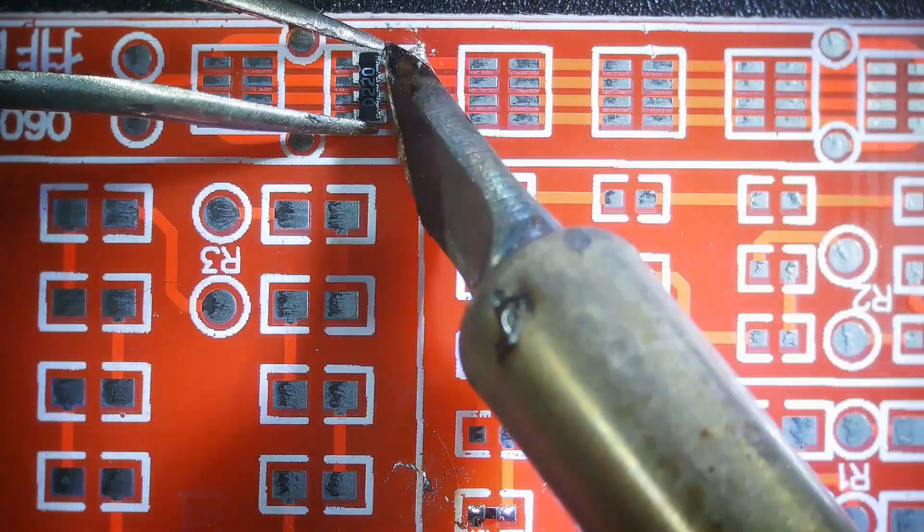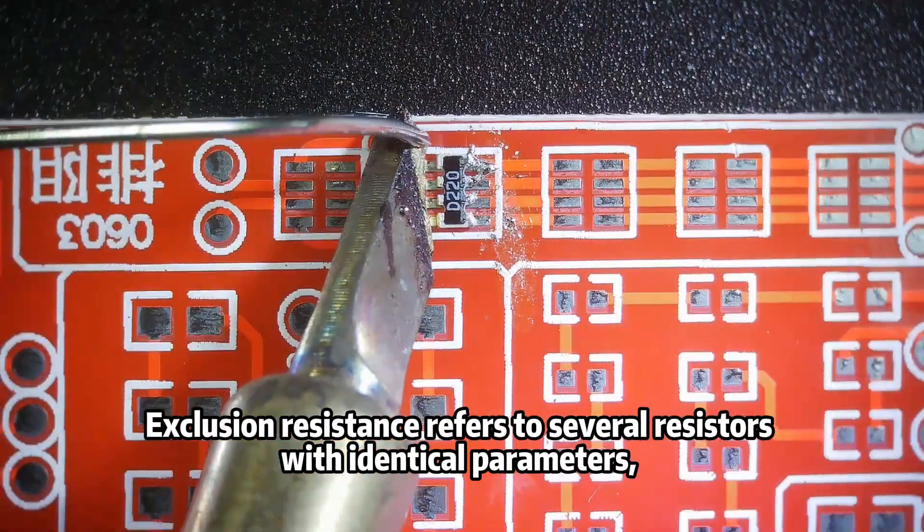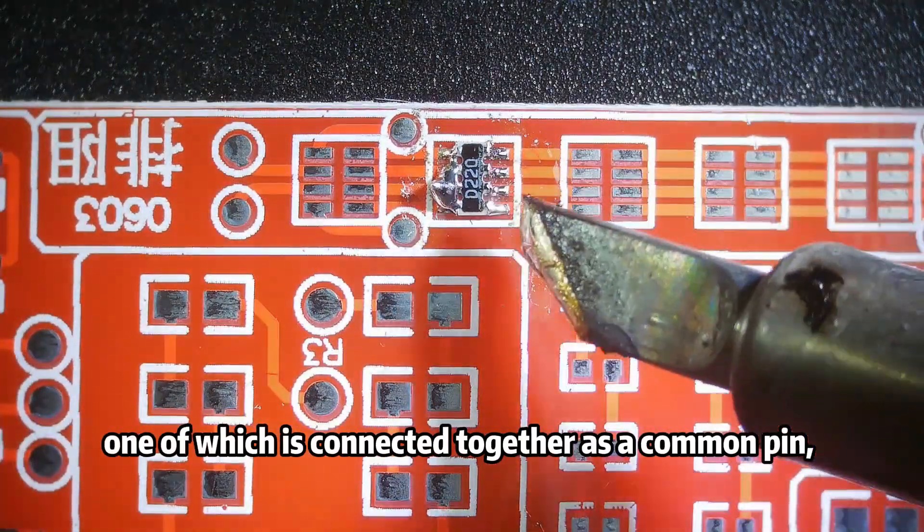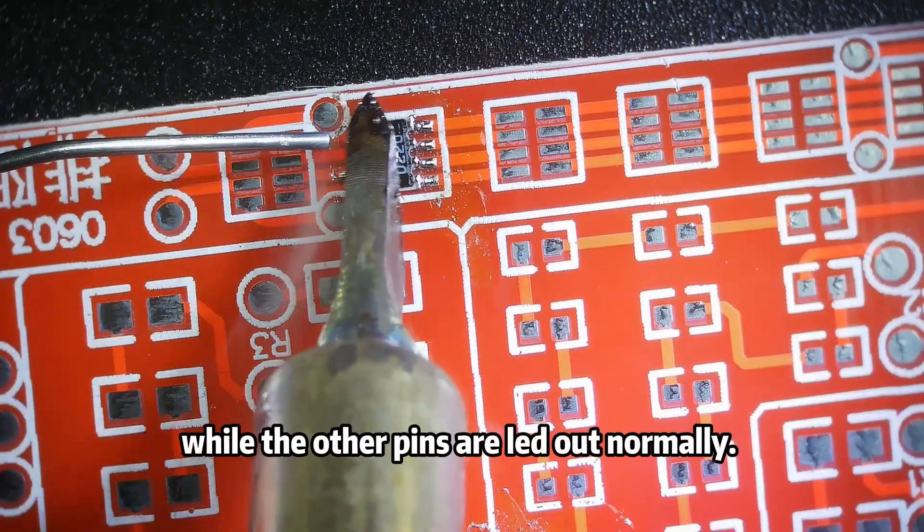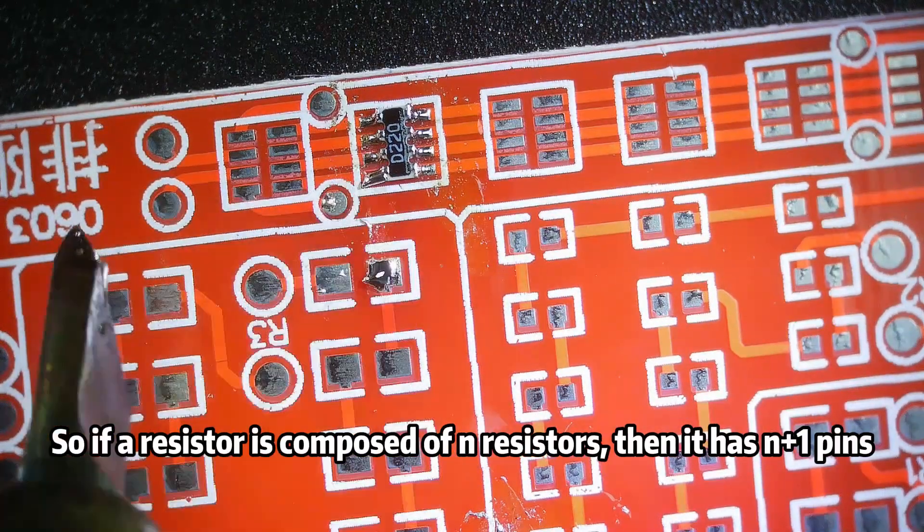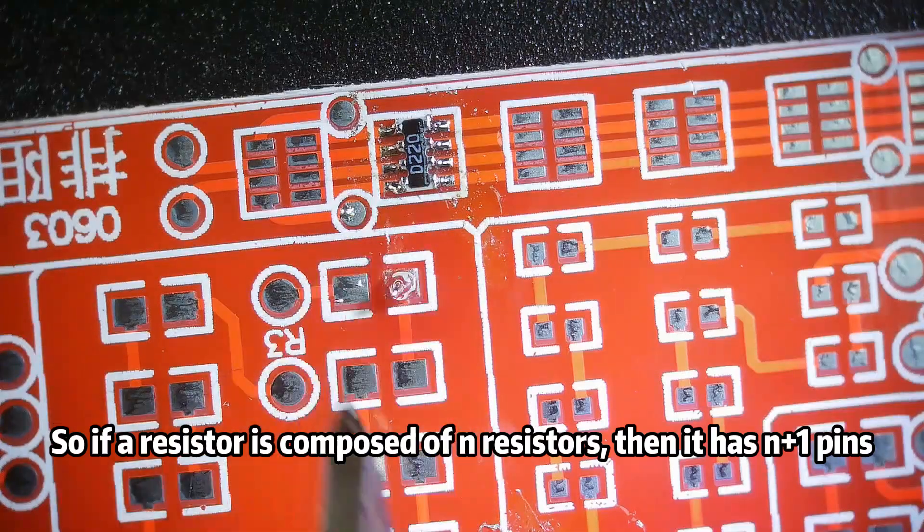Network resistor. Exclusion resistance refers to several resistors with identical parameters, one of which is connected together as a common pin, while the other pins are led out normally. So if a resistor is composed of N resistors, then it has N plus 1 pins.